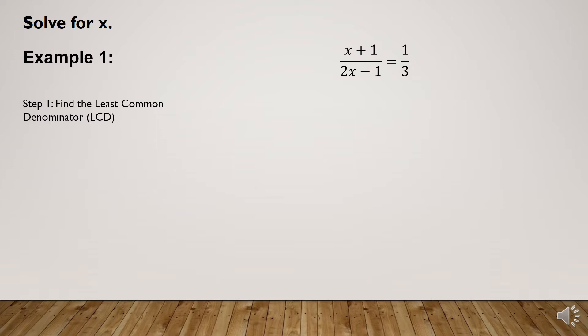Look at the denominators of our rational equation. We check if there is a common factor among all the denominators. As you can observe, there is no common factor between 2x minus 1 and 3. Therefore, we will multiply them, and that product is now the LCD. So the LCD is the product of (2x - 1) and 3.